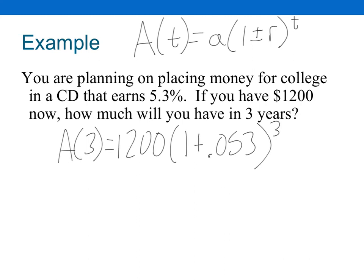So after three years, this amount of money is going to end up being $1,401.09. Make sure you're rounding correctly. We learned how to round back in grade school, so I expect you to be able to actually round correctly. So the amount of money that we have after three years is that amount.